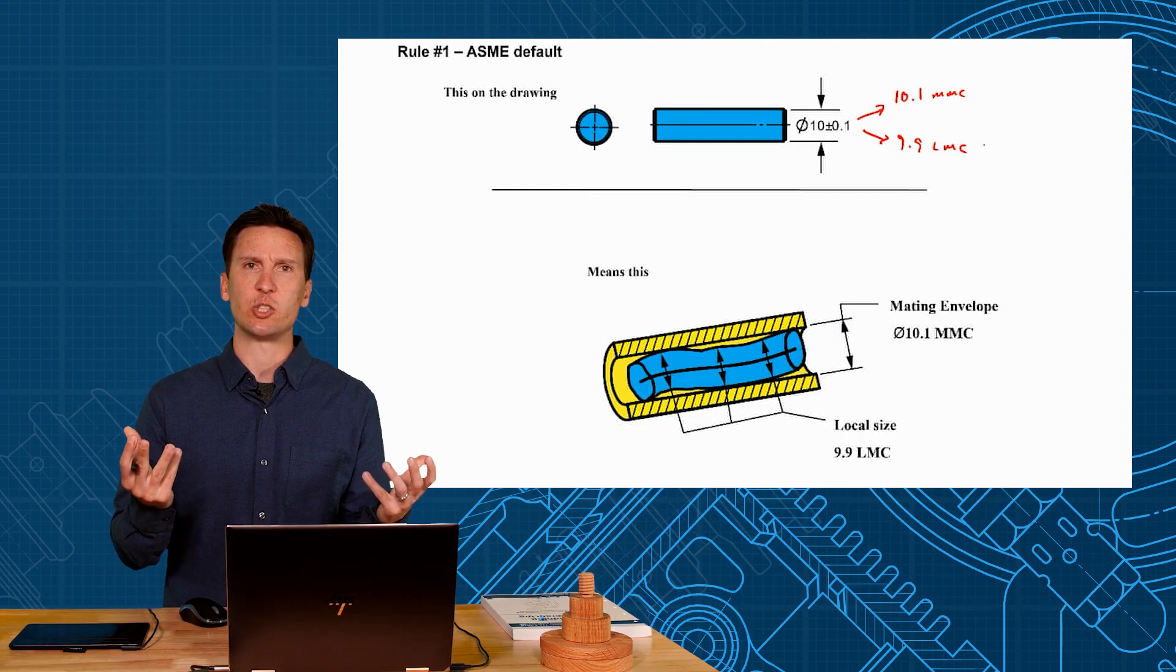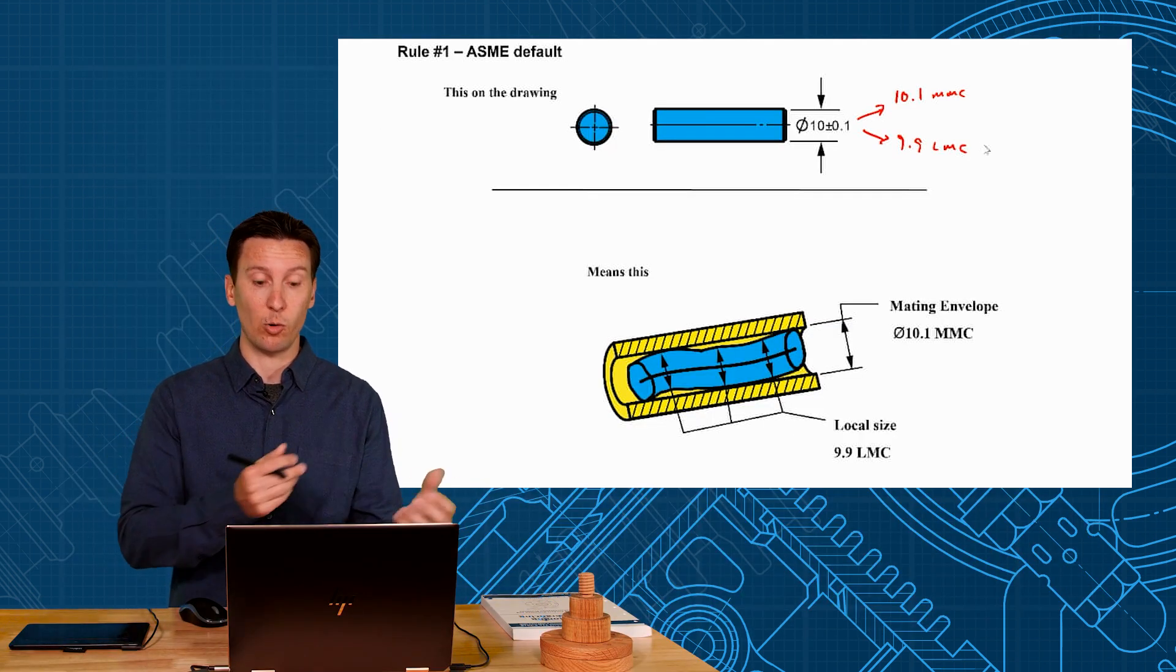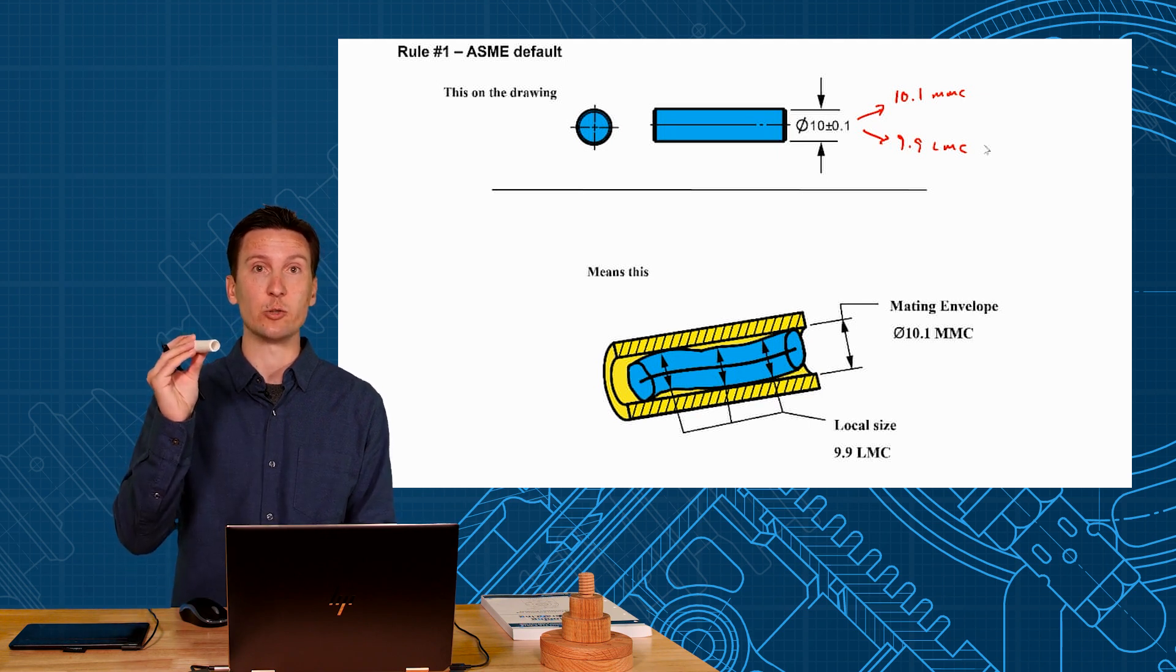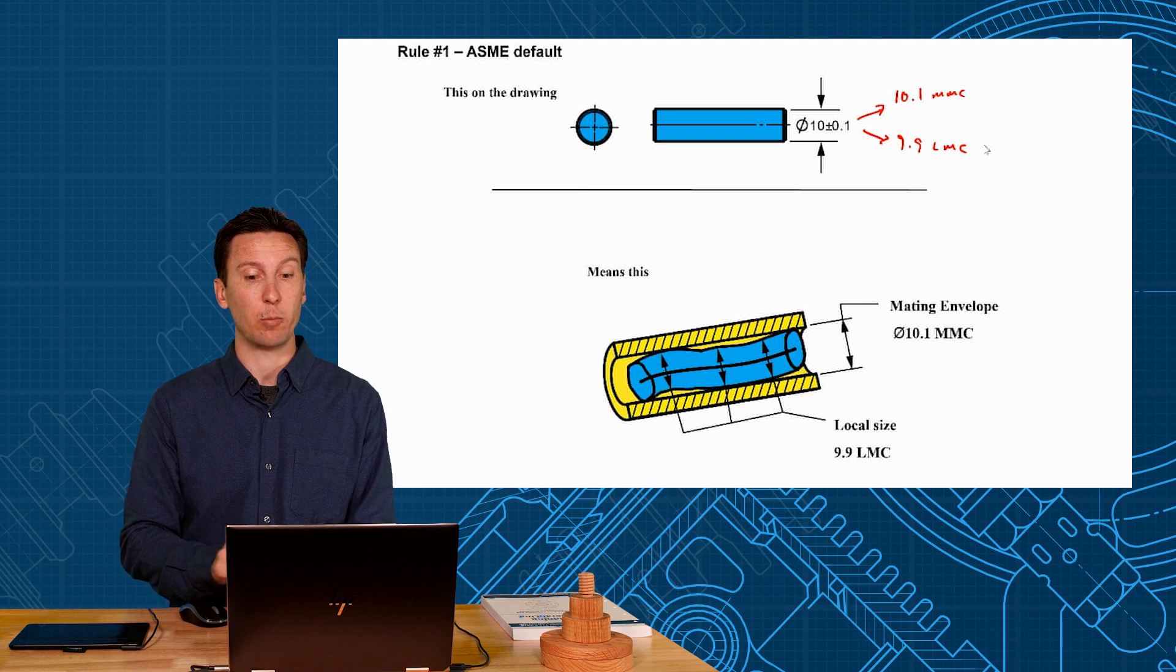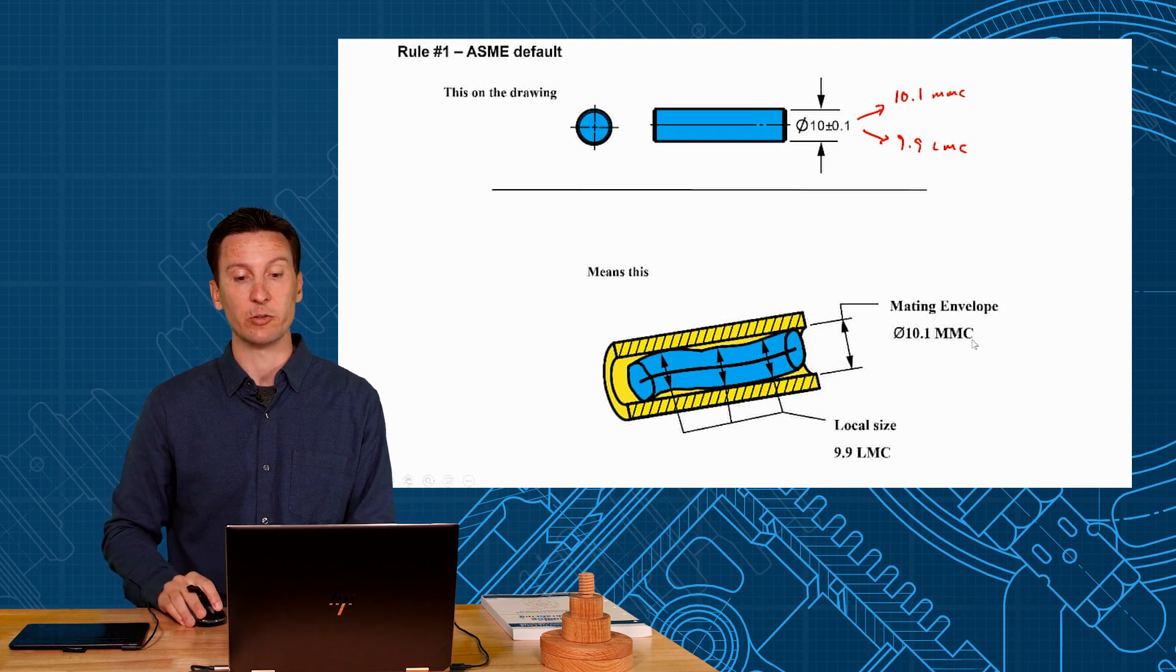So how do we make sure the shaft isn't too big and it's going to fit into a hole? Well we use a go gauge. We call that a mating envelope and the pin cannot get any bigger than the 10.1 mating envelope built at MMC.